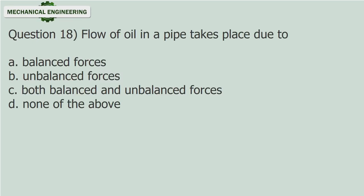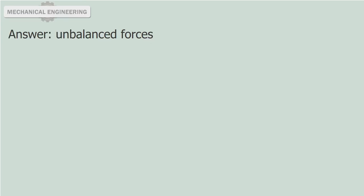Question 18: Flow of oil in a pipe takes place due to: A. Balanced forces. B. Unbalanced forces. D. None of the above. Answer: Unbalanced forces.